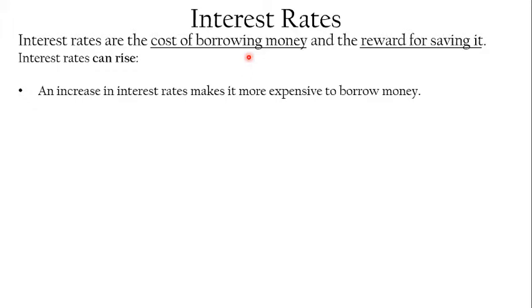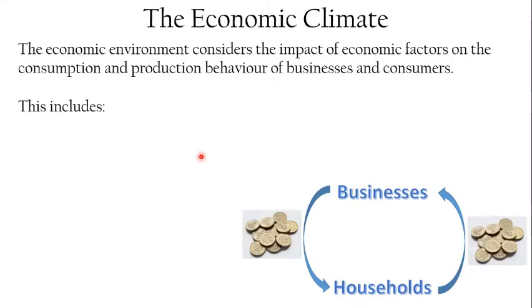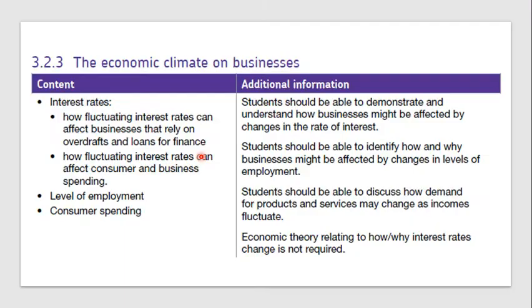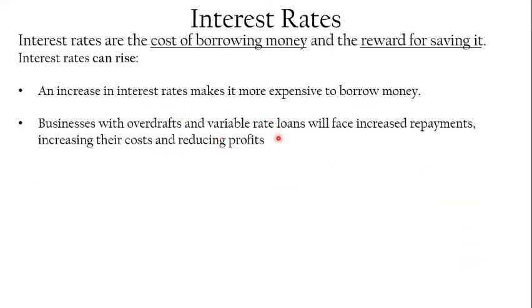Businesses that have overdrafts and variable rate loans will face increased repayments on their debts, which increases their costs and reduces their profits. The specification requires you to know how fluctuating interest rates can affect businesses that rely on overdrafts, loans, and finance. If the interest rate goes up, those overdrafts and loans become more expensive.